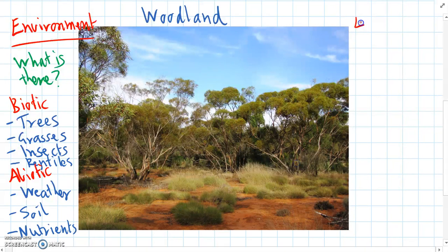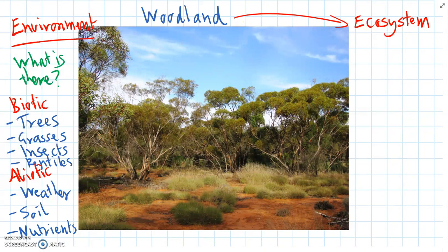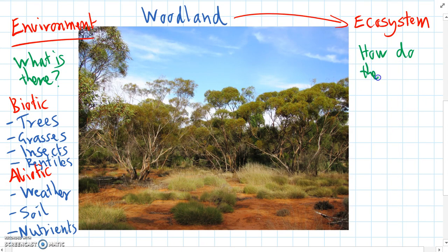But now when we start thinking of an ecosystem, we will still call it a woodland ecosystem. But now we're looking at how do all of these factors — how do these things interact with each other.